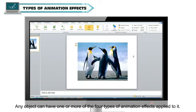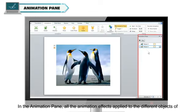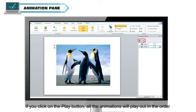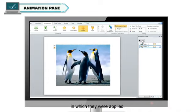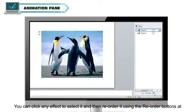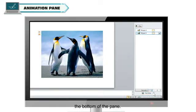Animation Pane enables you to work with the different animation effects that you have applied to the slide objects and modify them. Click on the Animation Pane option in the Advanced Animation group to open it. In the Animation Pane, all the animation effects applied to the different objects of the slide are listed. If you click on the Play button, all the animations will play out in the order in which they were applied. You can click on any effect to select it and then reorder it using the Reorder buttons at the bottom of the pane.